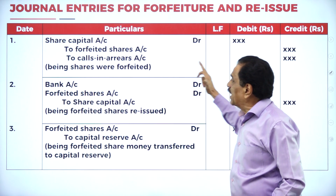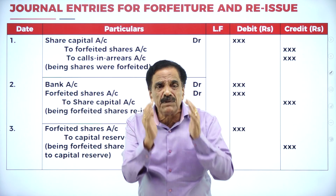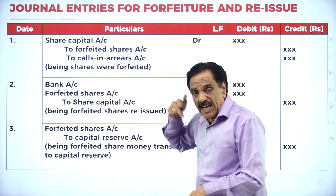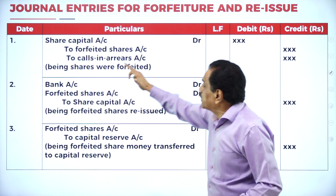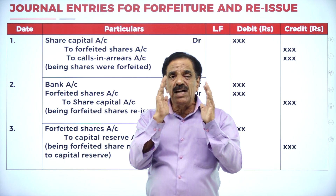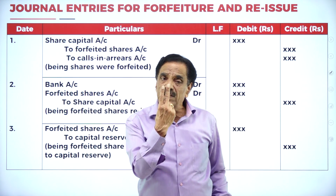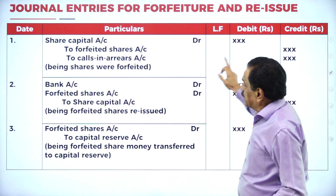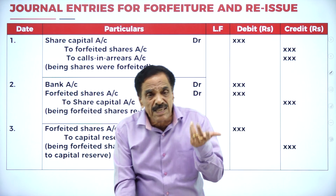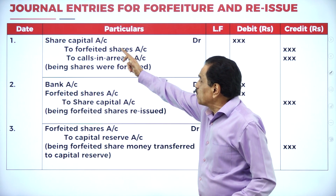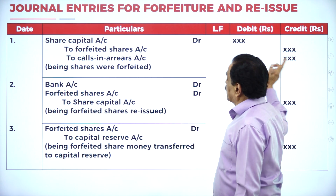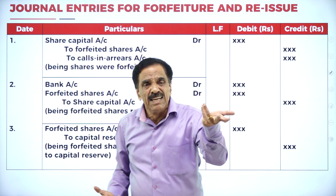The entry is: Share Capital Account Dr. to Forfeited Shares Account, to Calls in Arrears. Whatever amount he has to pay comes under share capital; whatever he already paid and has been cancelled is a gain to the company - credit entry to Forfeited Share Account; whatever he could not pay goes to Calls in Arrears. For example, if he fails to pay the final call and he has to pay ₹10 but already paid ₹8 and fails to pay ₹2: Share Capital Account Dr. ₹10, to Forfeited Shares ₹8, to Share Final Call ₹2.